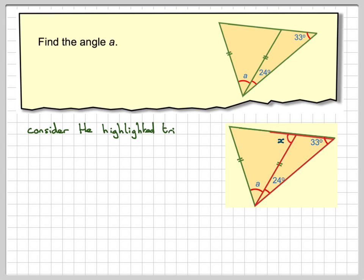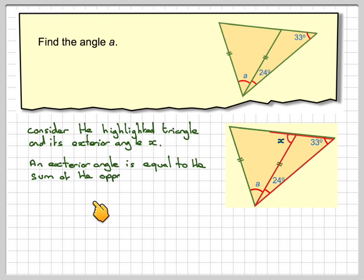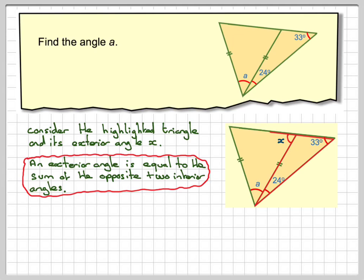We're going to consider that highlighted triangle and its exterior angle, we're going to call it X. The exterior angle is equal to the sum of the opposite two interior angles, i.e., X is equal to this angle plus this angle.